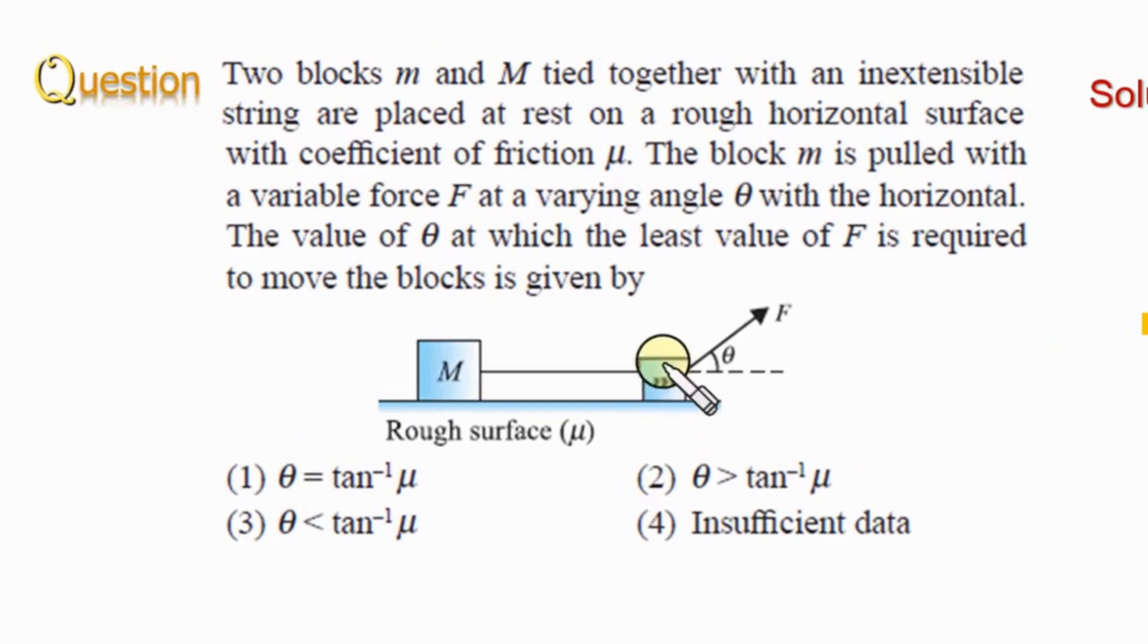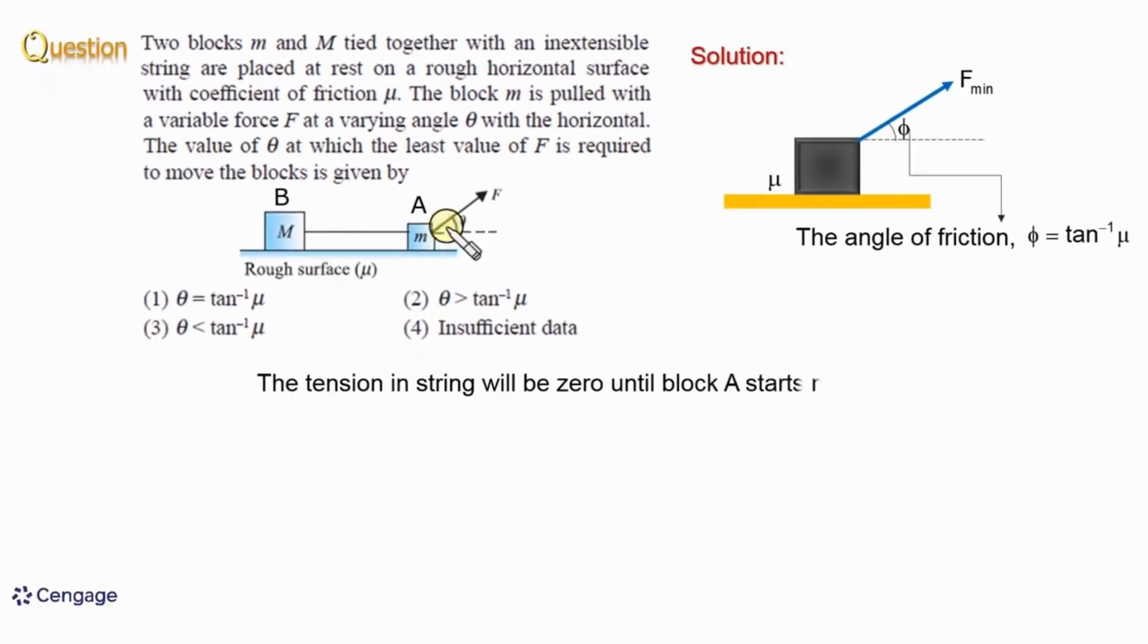Now coming to our situation, suppose this is block A and this is block B. The force is acting on block A. The tension in the string will be zero until block A starts moving. For A to move with the least value of force, this angle θ should equal the angle of friction.